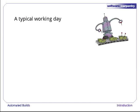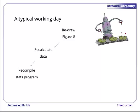Here's a typical working day for our robot. The first thing it wants to do when it sits down in the morning is redraw figure 8 for the paper it's writing. In order to do that, it needs to recalculate the data since it has some new numbers from a colleague back home. In order to do that, it needs to recompile its statistics program because it found and fixed a bug yesterday afternoon. And it needs to update the version of Java installed on the machine it's using — it has the right one on its laptop, but not on the machine it's using in the lab.